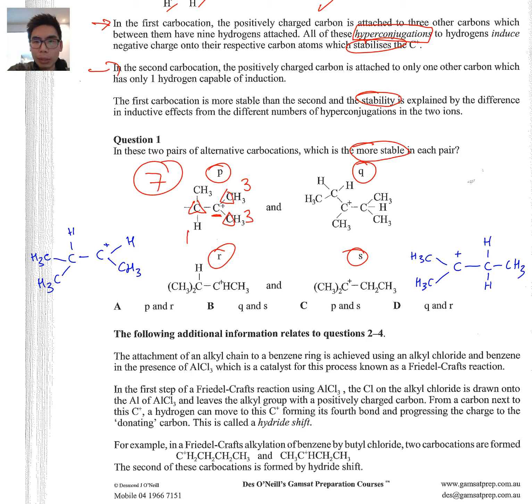And if you go to Q, the middle carbon here, the one with the positive charge, in this case it also has three neighboring carbons. However, if you count the number of hydrogens attached to them, we've got three on the bottom here, we've only got the one over here, and on the top left we have two. So if you count them all up, it's only six. So the one that has more hyperconjugations, in this case P, is going to be the more stable. So P is the more stable out of those two.